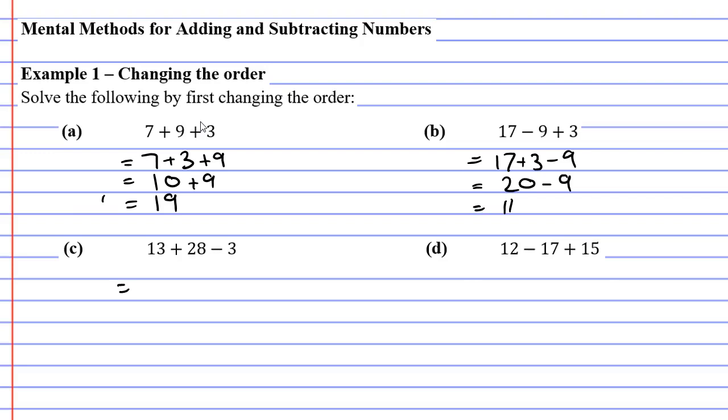Looking at question C, I'm going to change the order. I'm going to go 13, bring the minus 3 into the middle, and the plus 28 to the end. The reason I'm doing that is 13 minus 3 is 10. Once again, I'm trying to get a number that ends in 0, and it becomes really easy to solve. 10 plus 28 is 38.